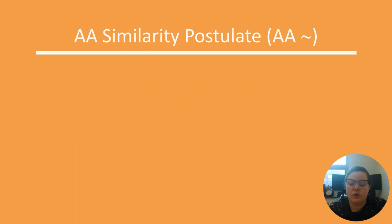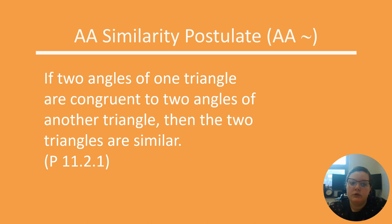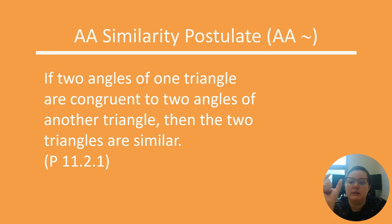If a triangle has two congruent angles, the third one has to be congruent as well. So if two angles of one triangle are congruent to two angles of another triangle, then the two triangles are similar. They would also be congruent if the side lengths were exactly the same, but without knowing the sides we can say they are at least similar.